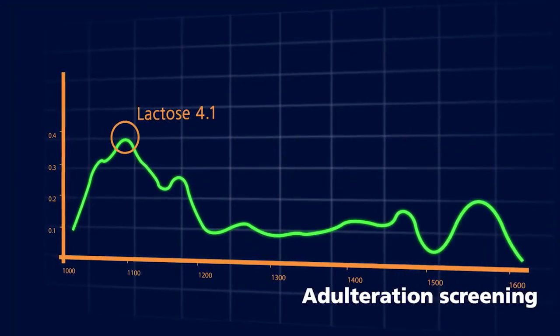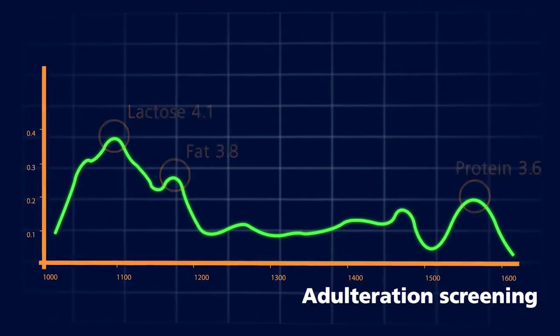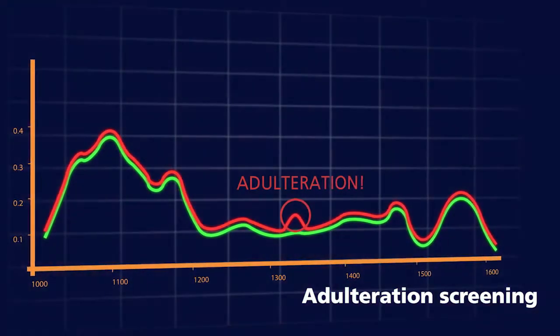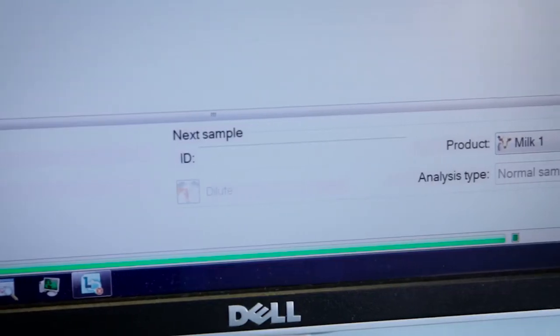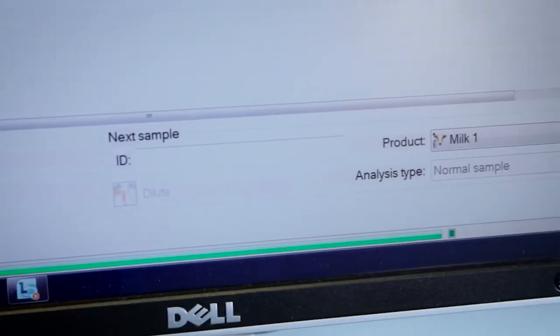A milk sample is tested against a profile for normal milk. A warning is given if there is a mismatch. Adulteration screening options allow you to check milk for abnormalities, such as known or unknown adulterants and added water.